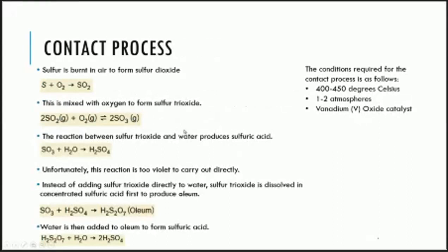Let's go through the steps of the contact process because this is quite important. Sulfur is basically burnt in air to form sulfur dioxide — sulfur plus oxygen gives you sulfur dioxide. This is then mixed with oxygen to form sulfur trioxide. It is important here that this is an equilibrium reaction, so we have the double arrow suggesting the forward reaction and also the backward reaction. Sulfur dioxide reacts with oxygen and you form sulfur trioxide as the product.